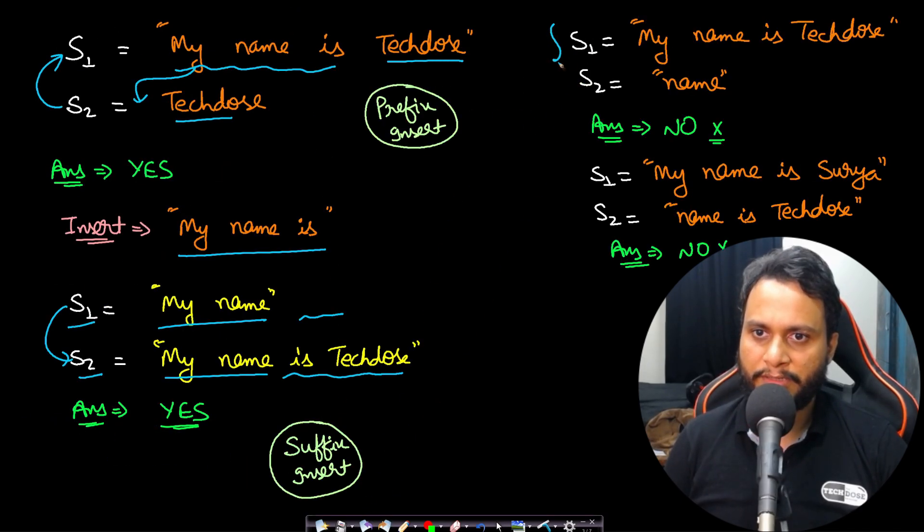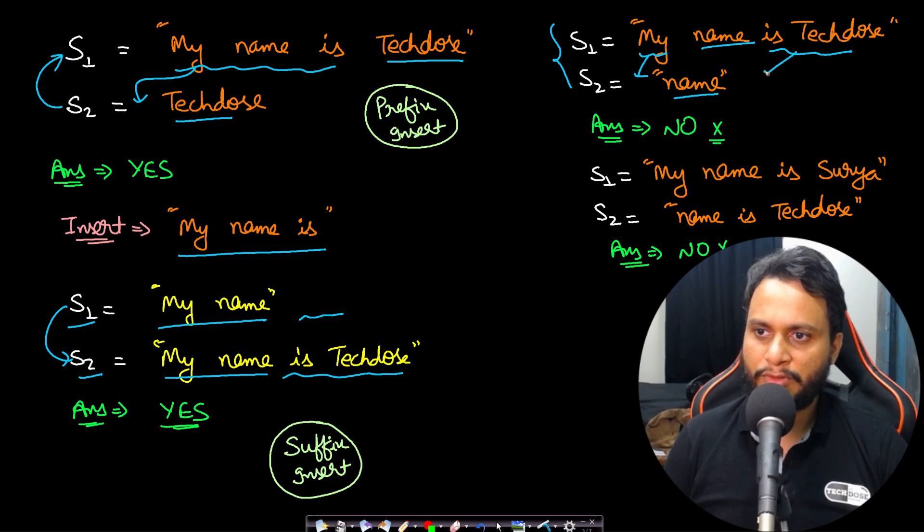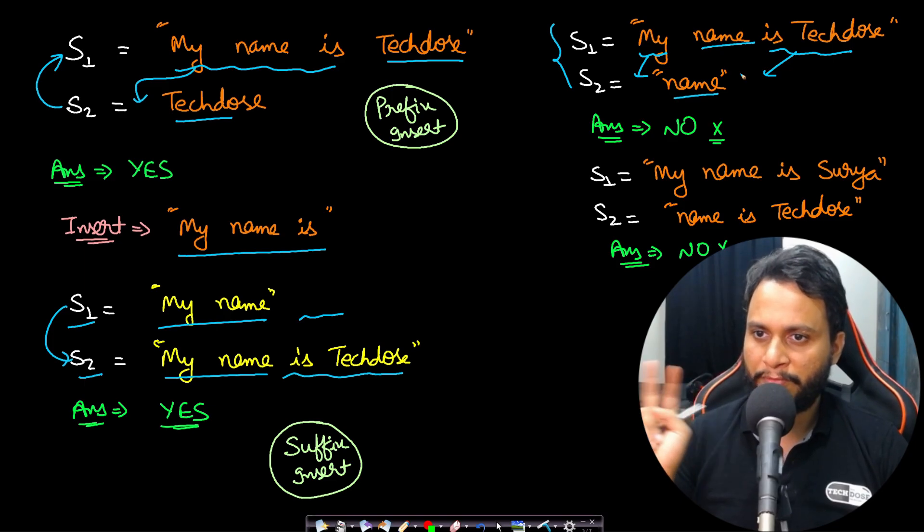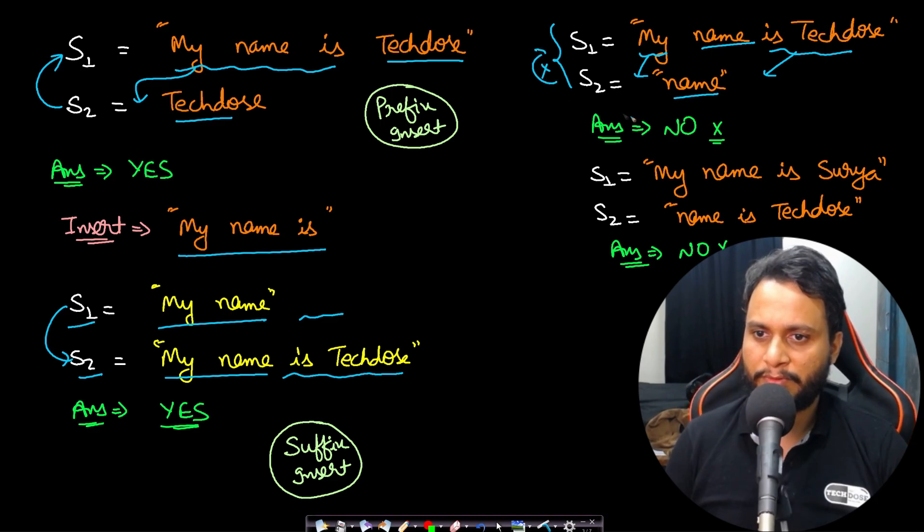Now let's look at another example. String S1 is 'my name is TakeDose' and string S2 is 'name'. Name is already present, that is fine. But 'my' needs to be inserted in the beginning and 'is TakeDose' needs to be inserted at the end. Now both prefix and suffix inserts are not allowed because they will become two different sentences while only one sentence insertion is allowed. That is why S2 cannot be converted to S1 and we will return no.